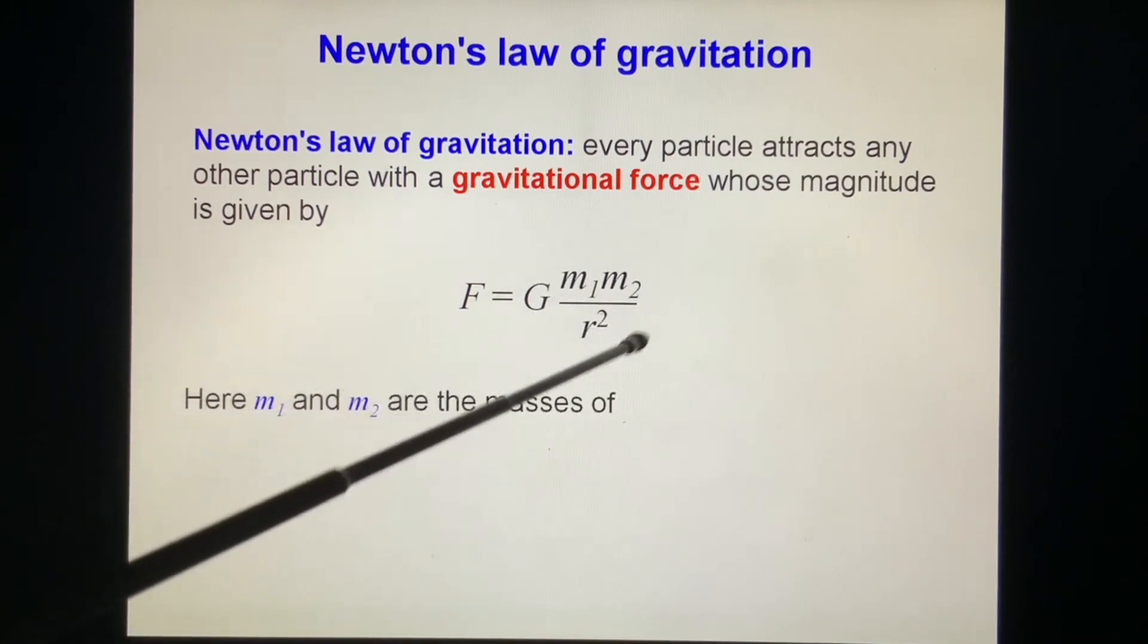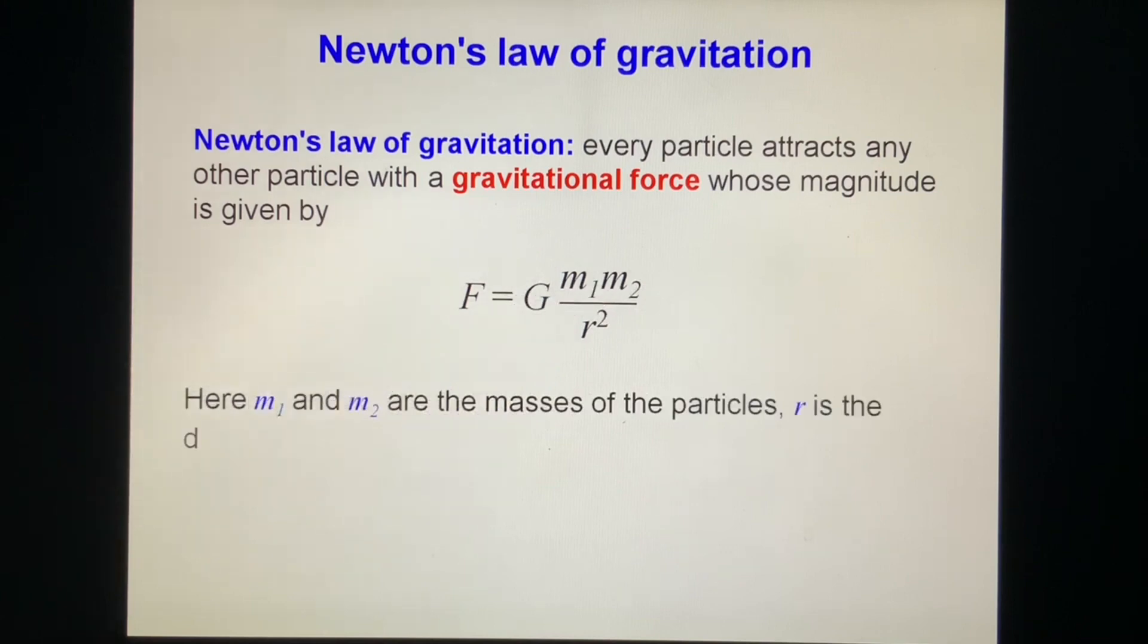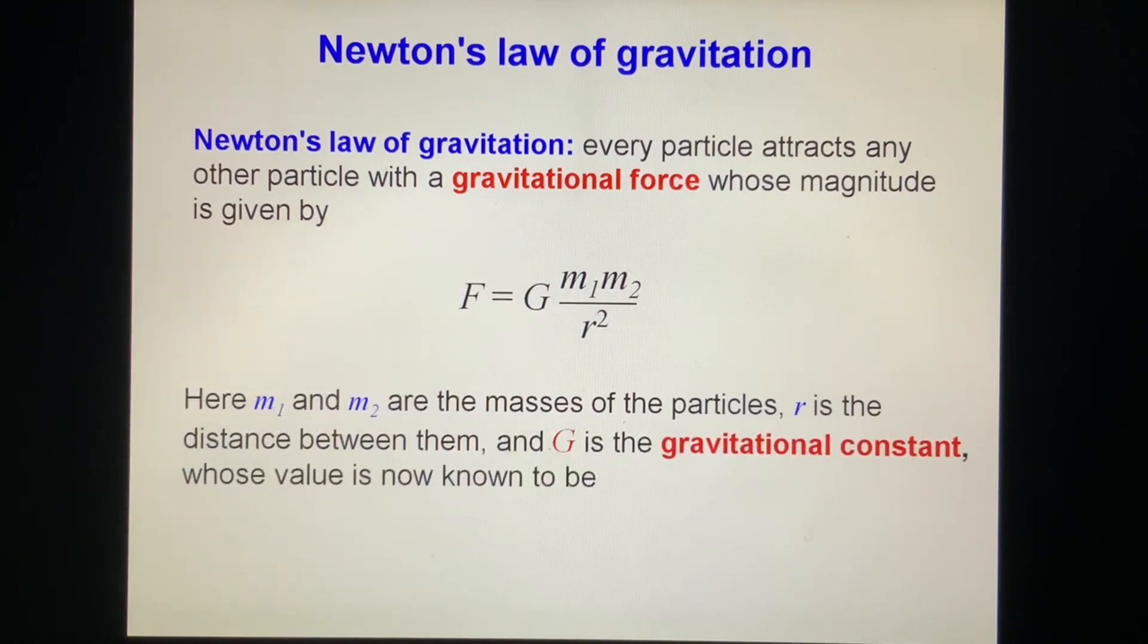M1 and M2 are the masses of the particles. R is the distance between them, and G is the gravitational constant, whose value is now known to be 6.67 times 10 to the minus 11 newton meter squared over kilogram squared.